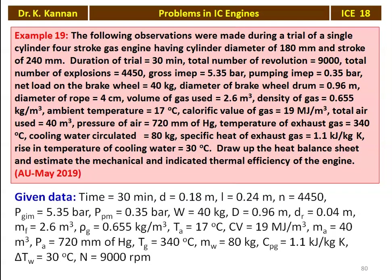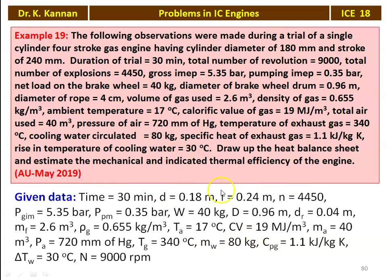We write down the given data: time of test 30 minutes, diameter 0.18 m, stroke length 0.24 m, number of explosions 4450, gross indicated mean pressure 5.35 bar, pumping mean pressure 0.35 bar, load on brake drum 40 kg, diameter of brake drum 0.96 m, diameter of rope 0.04 m, volume of fuel 2.6 m³, density of gas 0.655 kg/m³, ambient temperature 17°C, calorific value 19 MJ/m³, volume of air 40 m³, pressure of air 720 mmHg, exhaust gas temperature 340°C, mass of water 80 kg, specific heat of gas 1.1 kJ/kg·K, rise in temperature of cooling water 30°C, and speed of engine 9000 revolutions in 30 minutes.